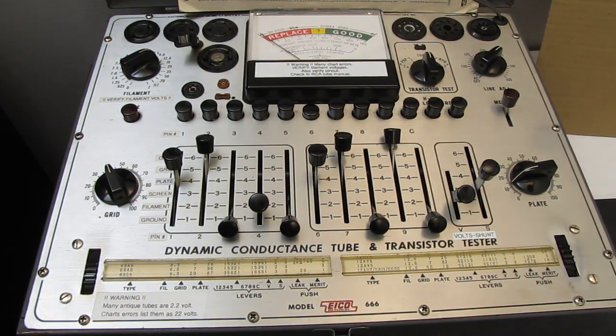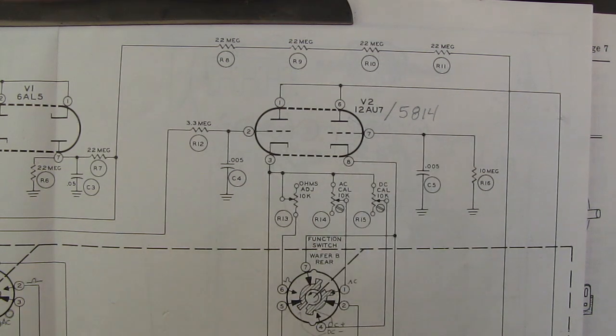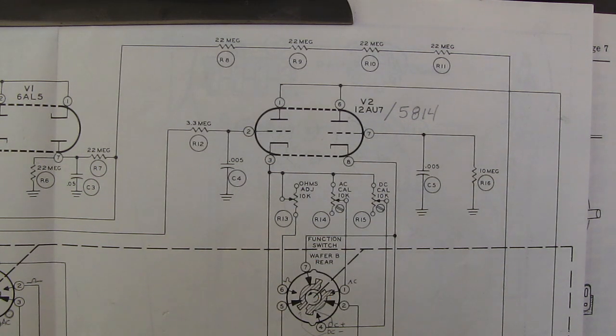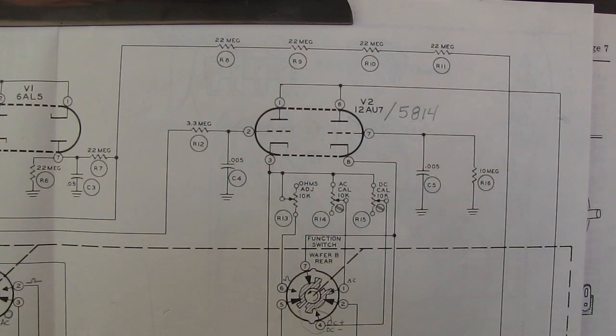And by the way, the 12AU7 can be replaced with a 5814. The 5814 is basically a mil-spec or instrument-rated version of the 12AU7. It's designed for high reliability in military and high-end commercial equipment. And it's designed specifically to address that heater to cathode issue that so many of the 12AU7, 12AX7s experienced. There's another version, the mil-spec version of the 12AX7 as well.